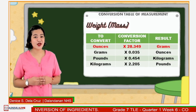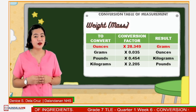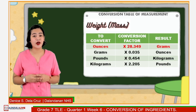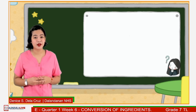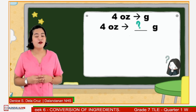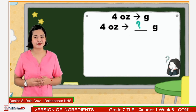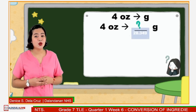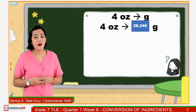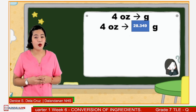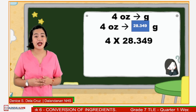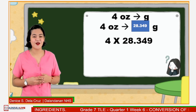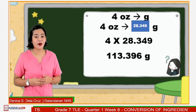This is the conversion table of measurement in weight or mass. It shows that to convert ounces to grams, we have to multiply the number of the given ounces by 28.349. For example, convert four ounces to grams. According to our conversion table, one ounce is equivalent to 28.349 grams. We are looking for the equivalent value of four ounces to grams, so we multiply four by 28.349. Very good! The answer is 113.396 grams.